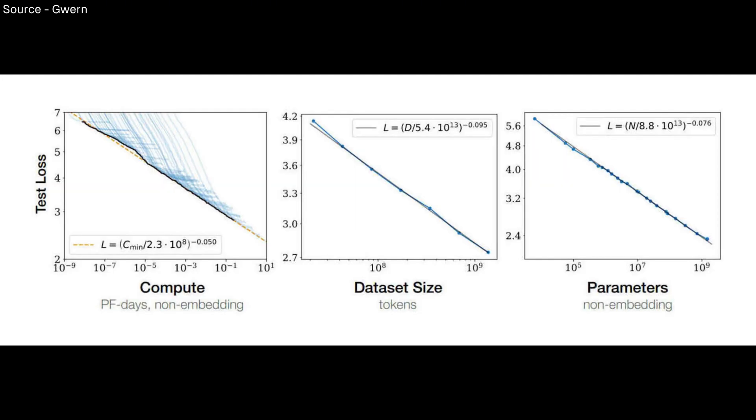Let's look at some evidence. Research has shown that neural network capabilities often follow surprisingly predictable scaling laws. Double the size of a network, and its performance improves by a consistent amount. These improvements don't just stop at some point. They continue as far as we can measure. Even more intriguingly, new capabilities often emerge suddenly at certain scale thresholds, much like how water suddenly transforms into ice at a specific temperature.